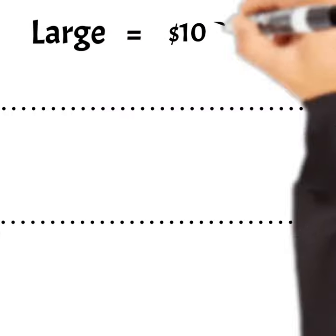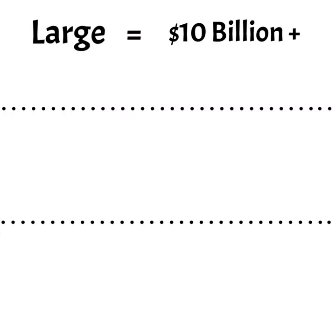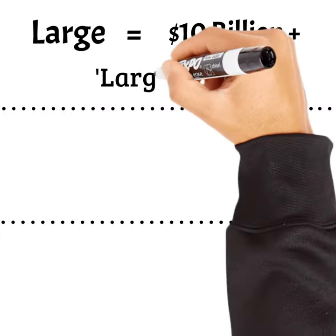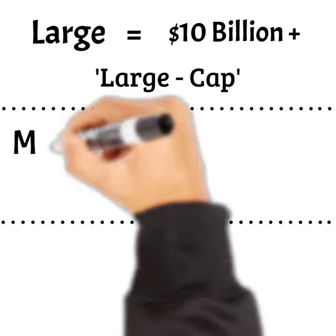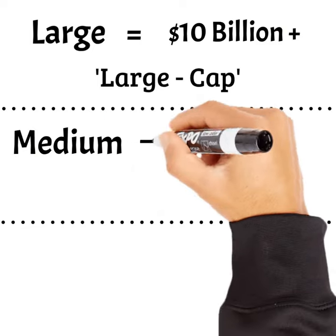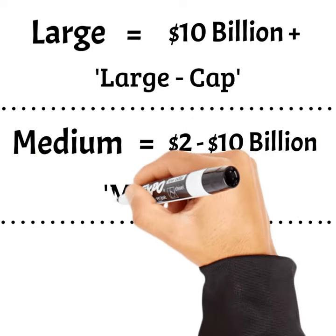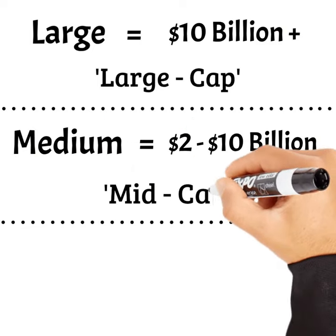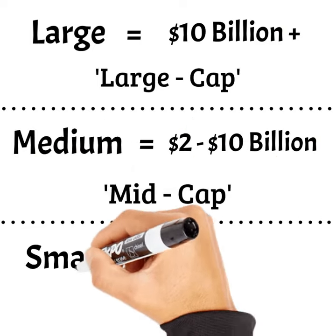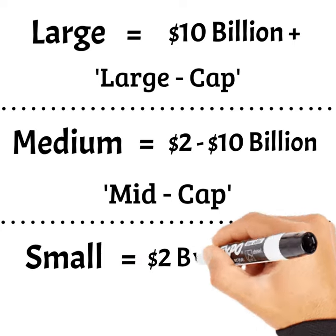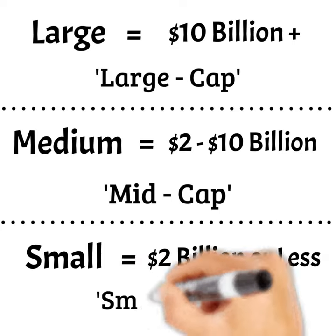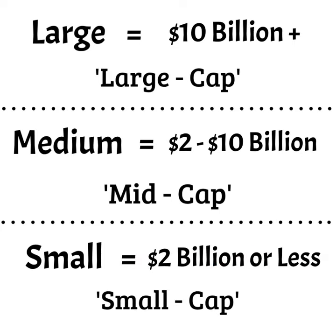Large companies with a market cap of over $10 billion are known as large caps. Medium firms with a market cap of $2 to $10 billion are known as mid caps. And small businesses with a market cap of less than $2 billion are known as small caps.